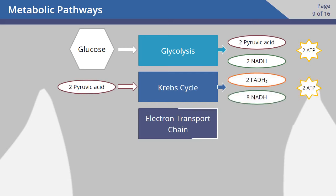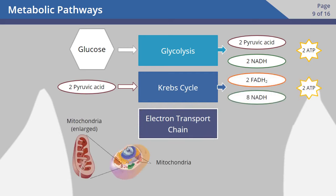Then, we move on to the electron transport chain. This takes place in the mitochondria, the powerhouse of the cell. It's a cluster of proteins that transfer electrons, which drives the creation of ATP. As we've already stated, cells use ATP as energy.